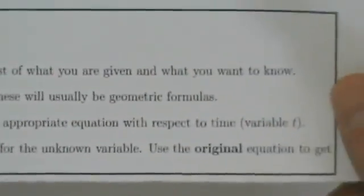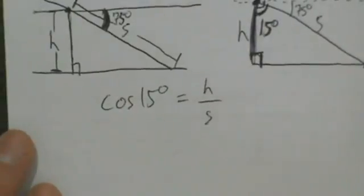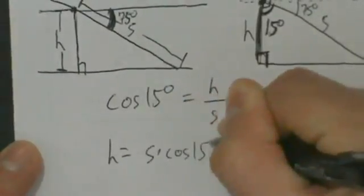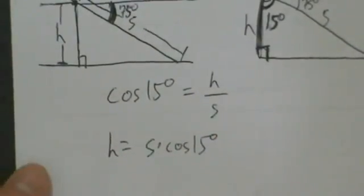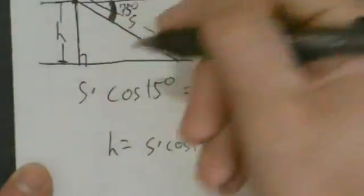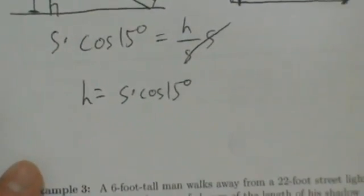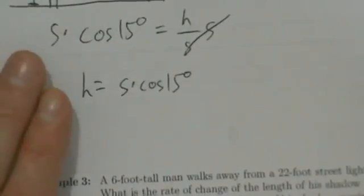Now step four: implicitly differentiate both sides of the appropriate equation with respect to time, the variable t. Before we do that, let's multiply both sides by s so that we have h equals s times cosine of 15 degrees. You might want to manipulate the equation a little bit before differentiating. We didn't really have to do this, but it's going to make things much simpler.